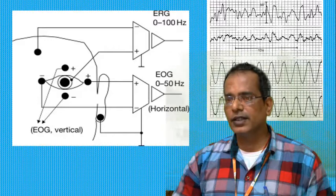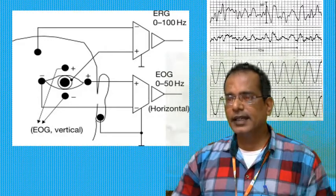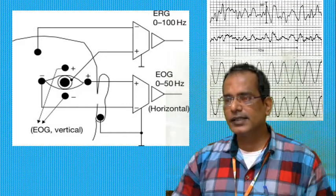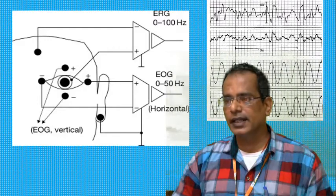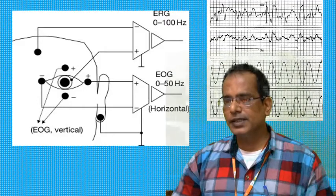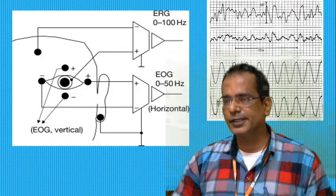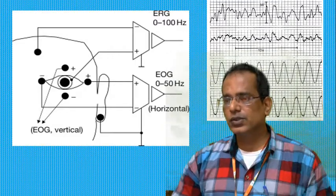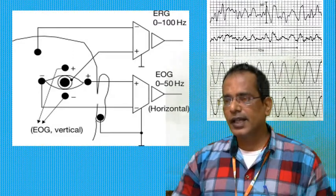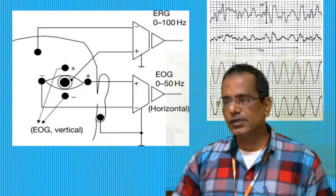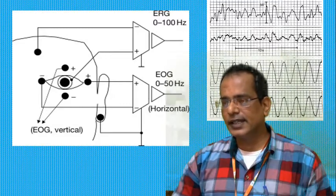The underlying concept is that the eye is an electrical dipole — relatively positive at the cornea and relatively negative at the retina. Any eye movement changes the orientation of the dipole, and it is this movement of the dipole that is recorded as a potential difference between the two EOG electrodes. In this arrangement, conjugate eye movements produce out-of-phase deflections in the two channels.